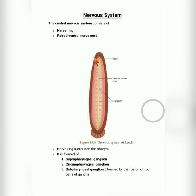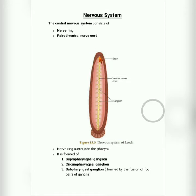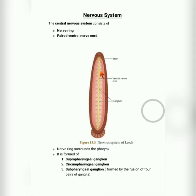The nerve ring is found around the pharynx, which is situated near the neck part, so it is in the anterior part. The paired ventral nerve cord is seen at either end of the body. This system is made up of various ganglions.